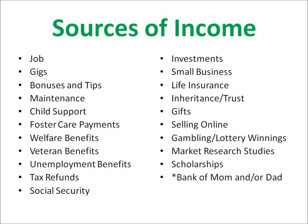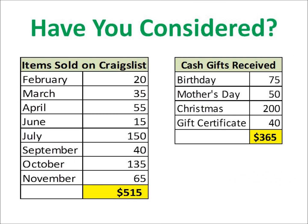Let's examine this partial list. We also have gigs such as babysitting, tutoring, and those types of things. Bonuses and tips, maintenance, child support, foster care payments, welfare, veteran and unemployment benefits, tax refunds, and social security. Investments, small business, life insurance, inheritance or trust, gifts, selling online, gambling and lottery winnings, market research studies, scholarships, and the bank of mom and/or dad. You might be thinking that gifts and selling online aren't really sources of income, but have you considered how each transaction adds up over a year's time?